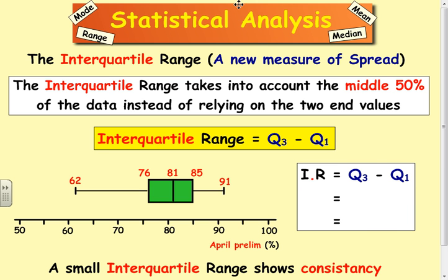In this lesson we're going to look at something called the interquartile range and then the semi-interquartile range. Effectively these are measures of spread, how spread out the information is or how spread out the data is.